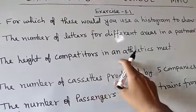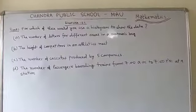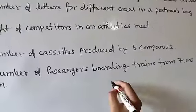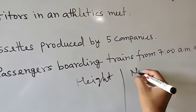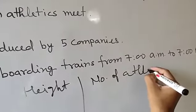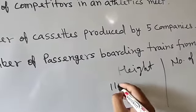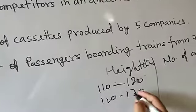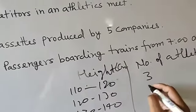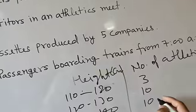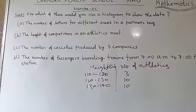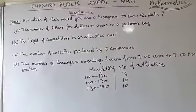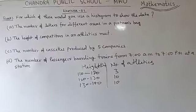The second option is the height of competitors seen in an athletics meet. If certain athletes are there, you can get the height of each competitor and make group data. For example, you can make a table with height and number of athletes: 110 to 120, 120 to 130, 130 to 140 cm, with counts like 3, 10, 10. So for height you can make groups, and you can prepare the histogram for condition B.